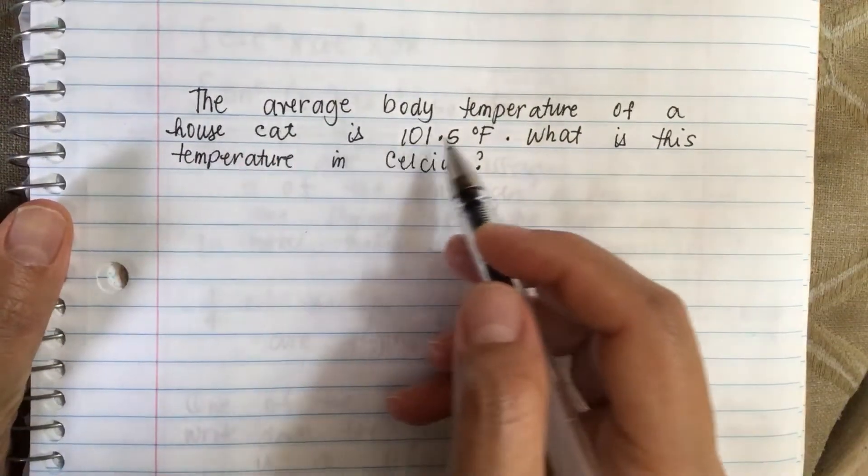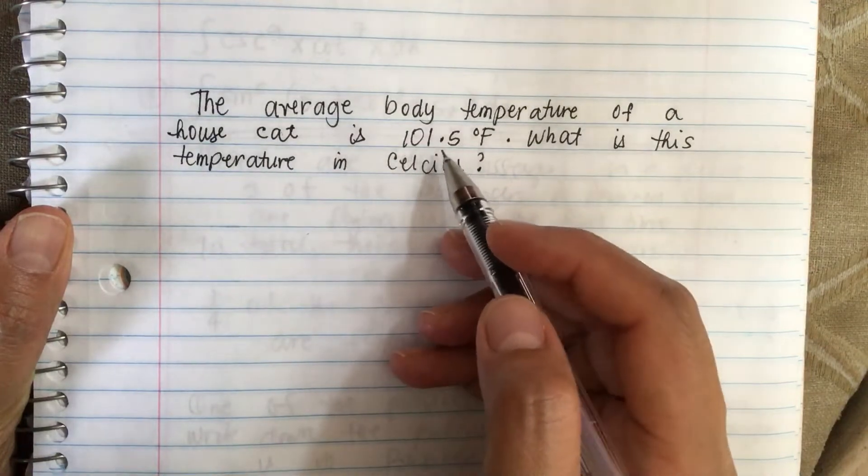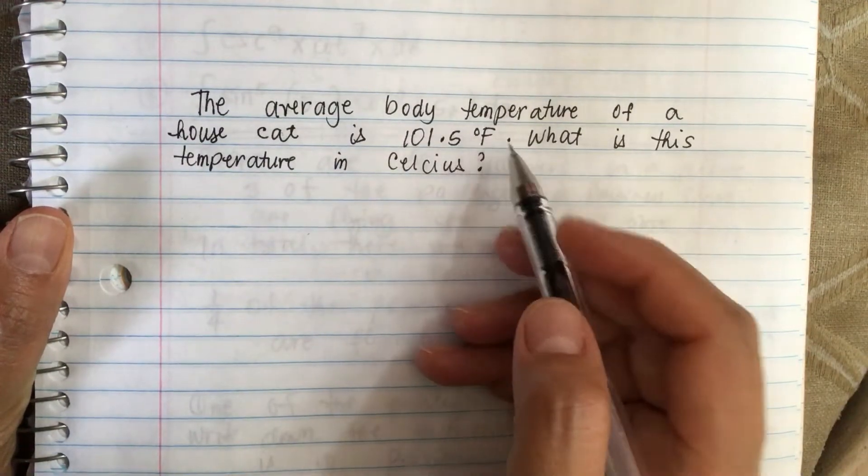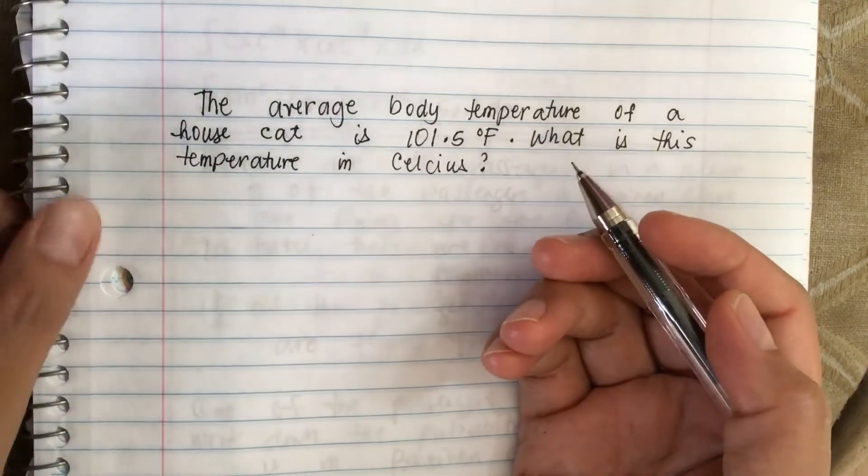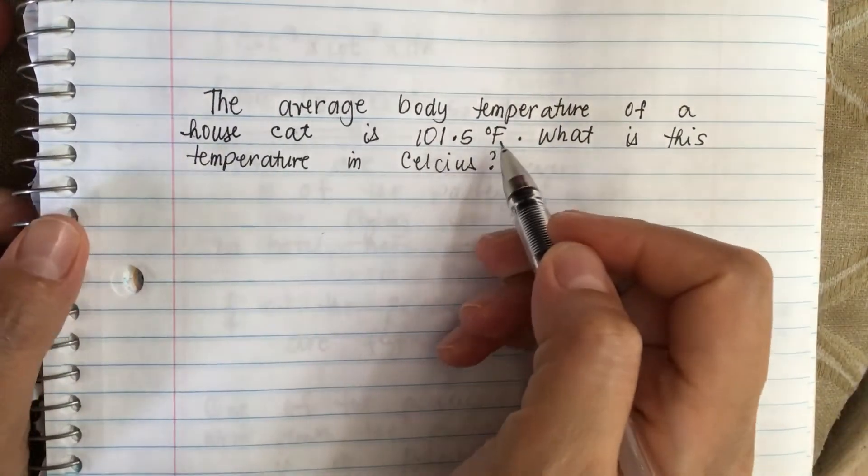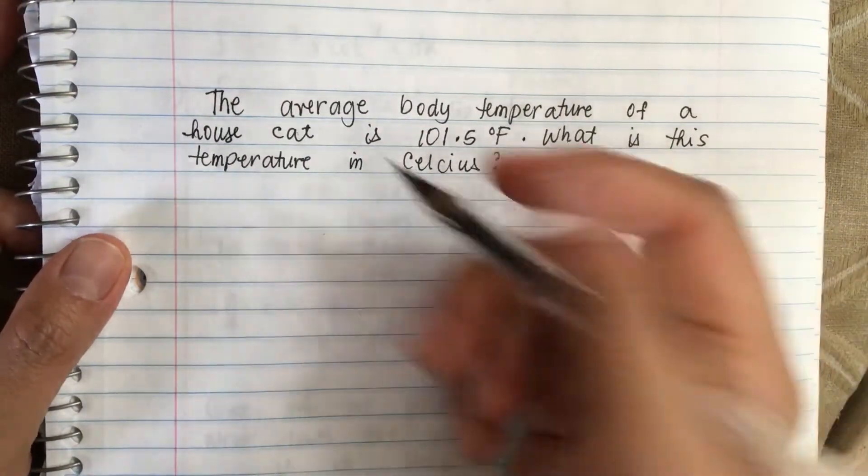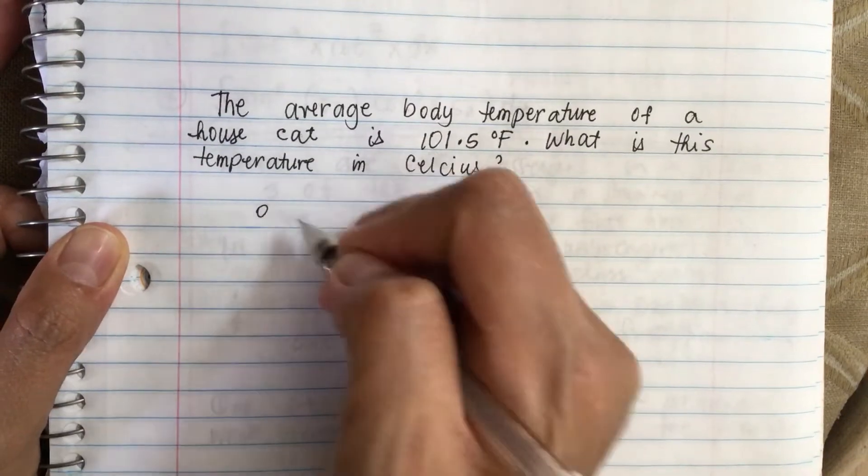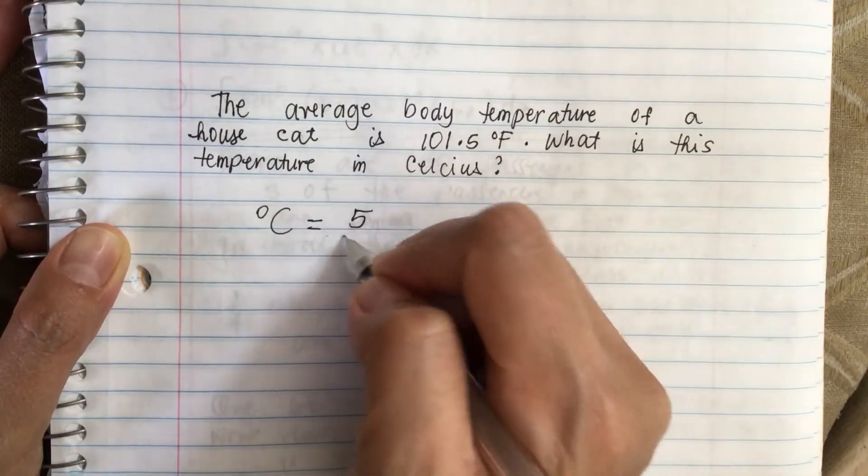The average body temperature of a house cat is 101.5 degrees Fahrenheit. What is this temperature in Celsius? So this means that we have to convert Fahrenheit to degrees Celsius. So the formula degrees Celsius is equal to 5 over...